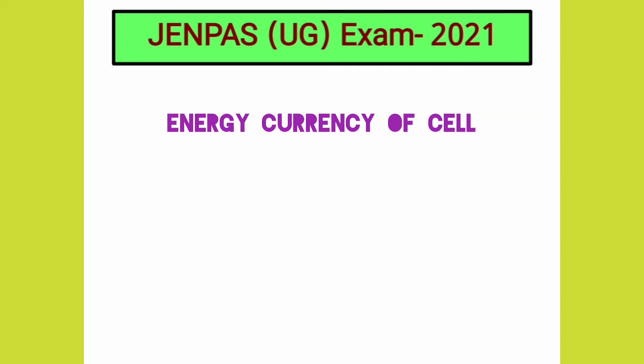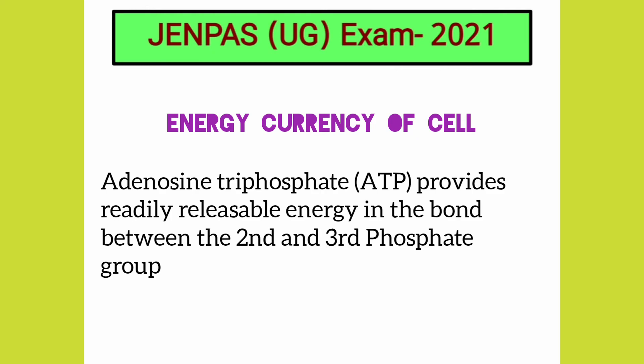What is the energy currency of the cell? Adenosine triphosphate, or ATP, is commonly referred to as the energy currency of the cell because it provides readily releasable energy in the bond between the second and third phosphate groups.